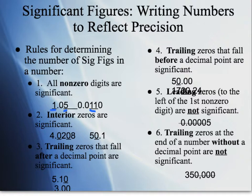Rule two: interior zeros — what I call sandwiched zeros — are significant. These are zeros in between two non-zero digits. For example, the zero between four and two counts, the zero between two and eight counts. In 50.1, that zero definitely counts because we know the measurement is precisely 50 and we estimate the 0.1 — so sandwiched zeros always count.